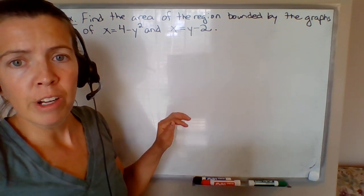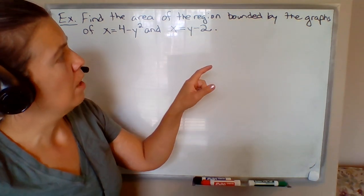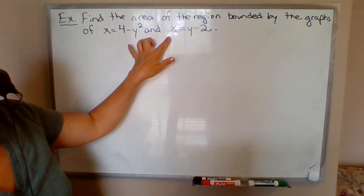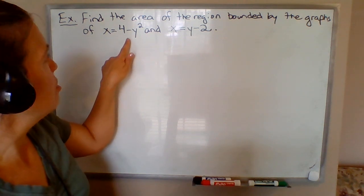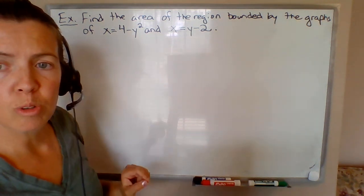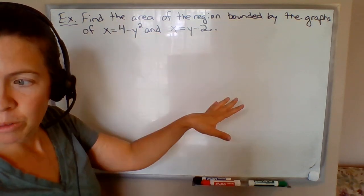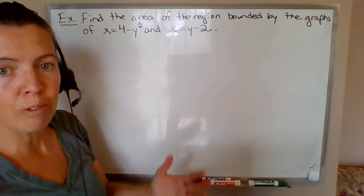Here's an example. We're asked to find the area of a region bounded by the graphs of two equations that are written in terms of y. So x = 4 - y² and x = y - 2. Make sure you pay careful attention to the fact that this is not y = x - 2, it's going the other way around.